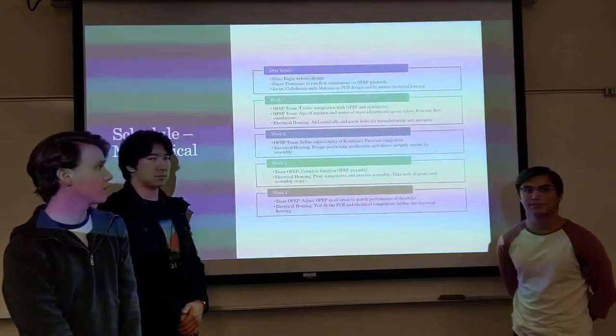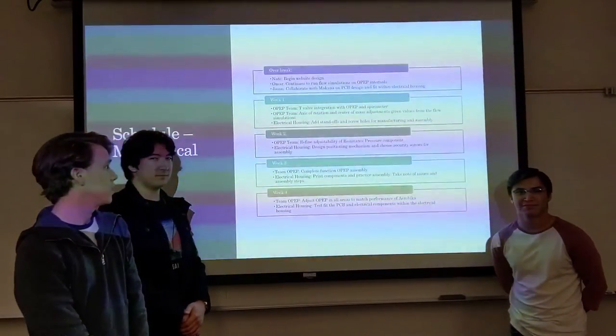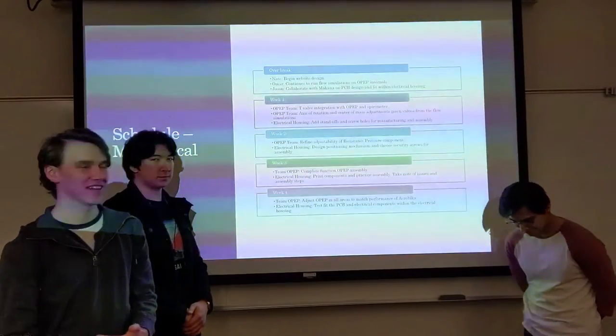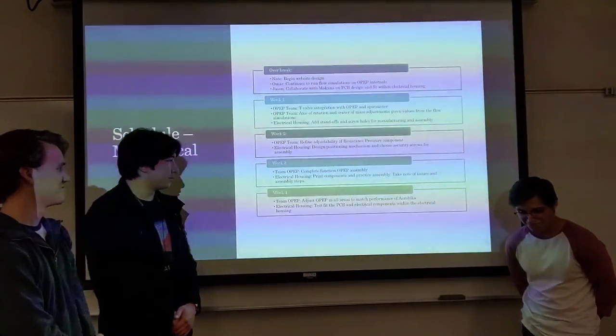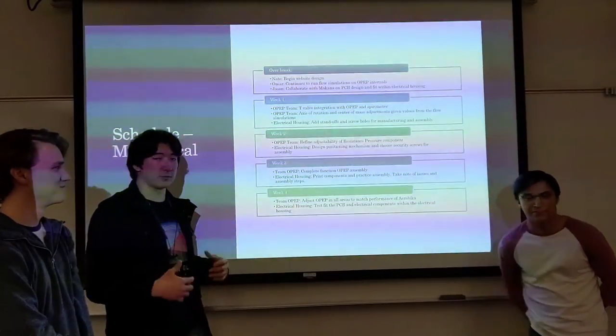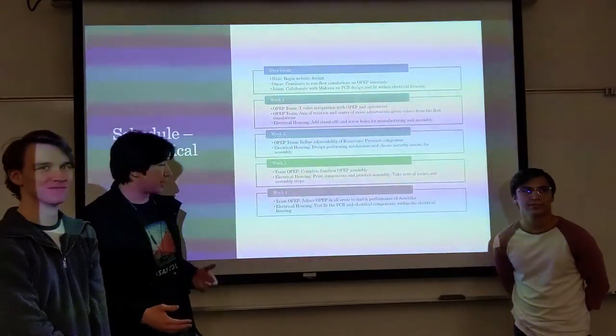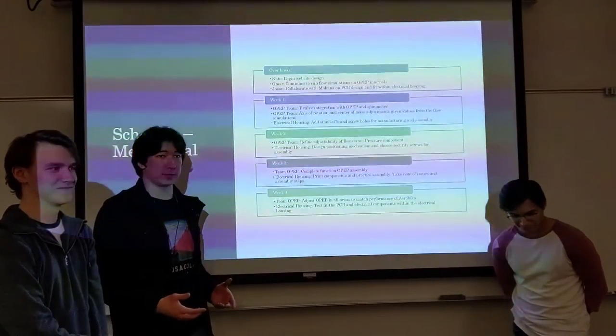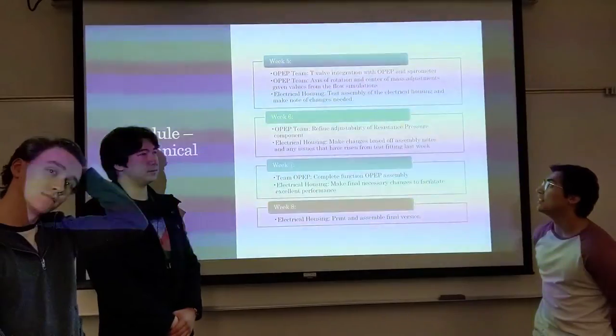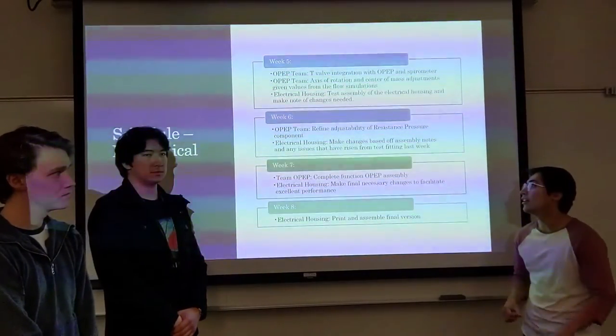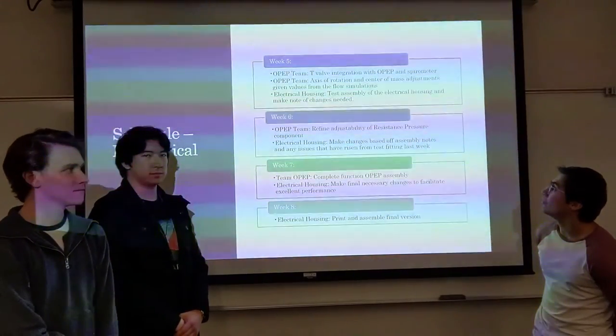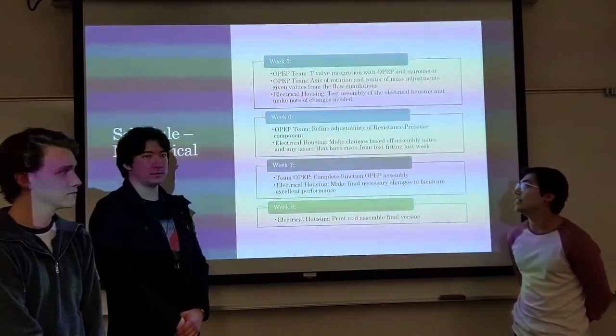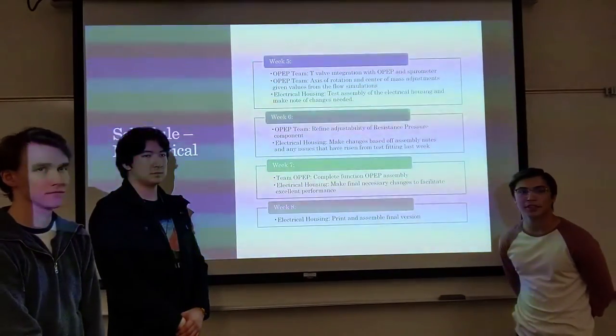For week three, the OPEP team will complete a fully functional OPEP assembly and the electrical housing frame components and practice assemblies, and then we'll take notes on issues and assembly steps. For week four, the OPEP team will be adjusting all the areas to match the performance of the aerobica, our main rival and competitor. The electrical housing around this time should have access to the PCB and multiple electrical components, so we'll be doing test fits during that week. Week five, we will be working on the T-valve configuration connecting the OPEP and the spirometer, as well as further developing anything that has to do with the axis of rotation or any information we gained from the flow simulations, and again, furthering development on the electrical housing.